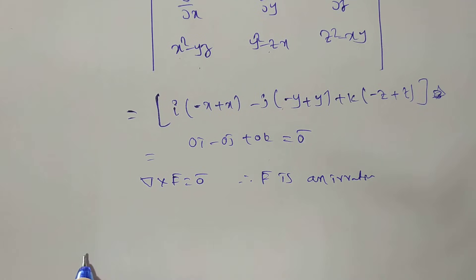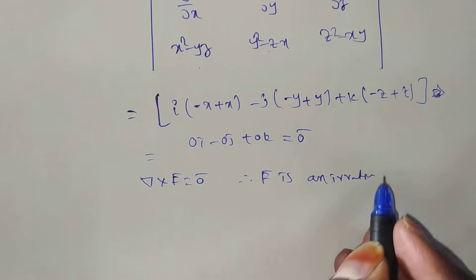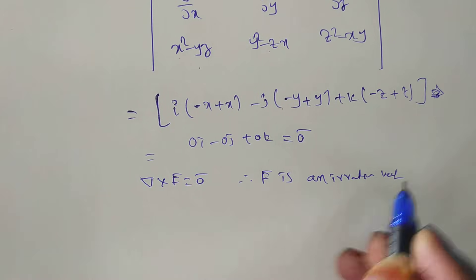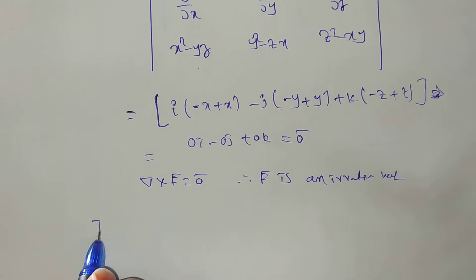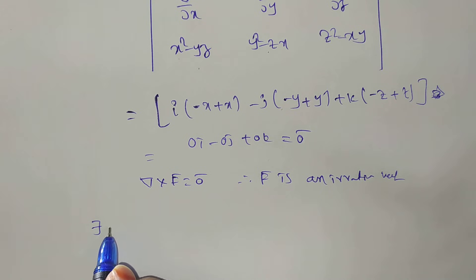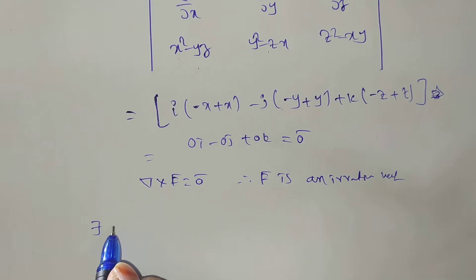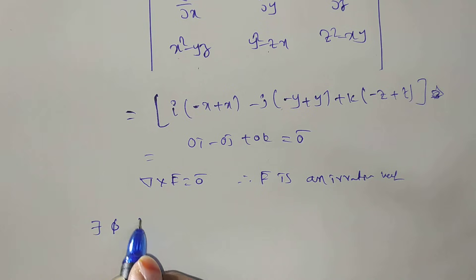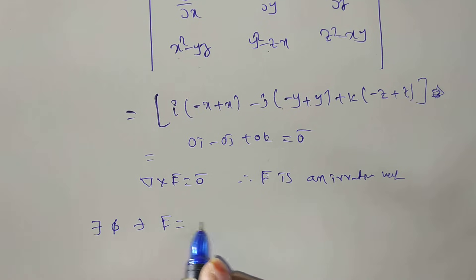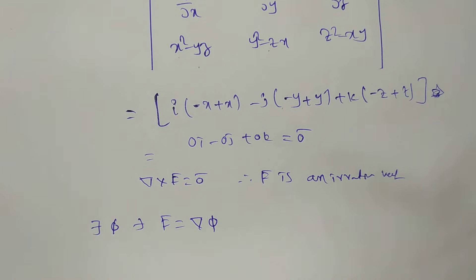Therefore, f̄ is an irrotational vector. From the scalar potential function definition, there exists a scalar point function π such that f̄ = ∇π.